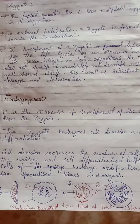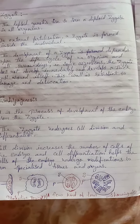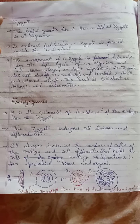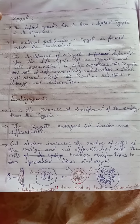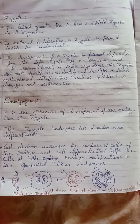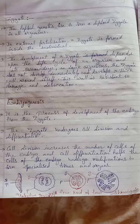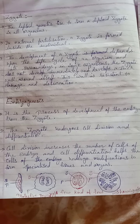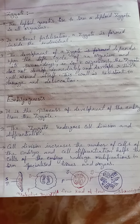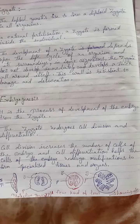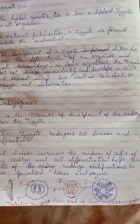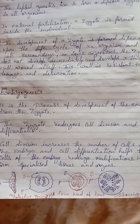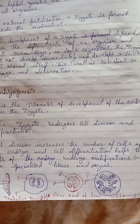Embryogenesis. Embryogenesis is the process of development of the embryo from the zygote. The zygote undergoes cell division and differentiation. Cell division increases the number of cells of the embryo, and cell differentiation helps the cells undergo modifications to form specialized tissues and organs.